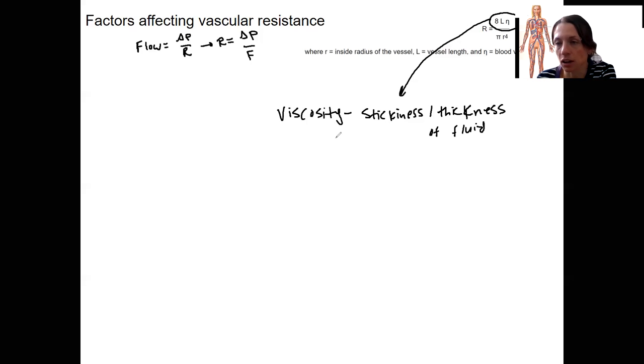But under normal circumstances, this isn't a variable that's going to change a whole lot in one individual. In cases of anemia, that could potentially change. So again, increased viscosity equals increased resistance. This is true basically just on common sense. Honey doesn't travel very well through a tube. The molecules can't slide past each other very well. That's literally what resistance is. So that is a factor. I want you to know it's not going to be relevant for regulating blood pressure, but it is clinically relevant in terms of altered viscosity.